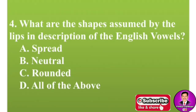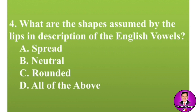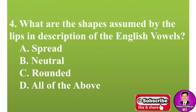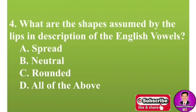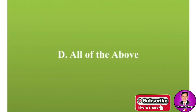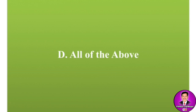Next MCQ: What are the shapes assumed by the lips in the description of English vowels? Options are: A, spread; B, neutral; C, rounded; D, all of the above. The correct answer is D, all of the above.